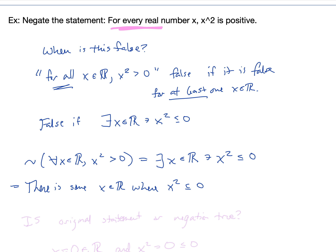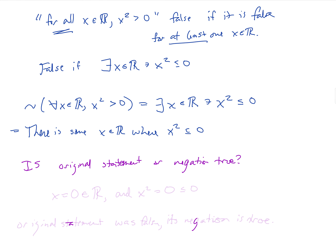Incidentally, which of these statements is true? Is it true that for any x ∈ ℝ, x² > 0? No — x = 0 is a real number, and 0² = 0, which is ≤ 0. So the original statement was false, and its negation is true.